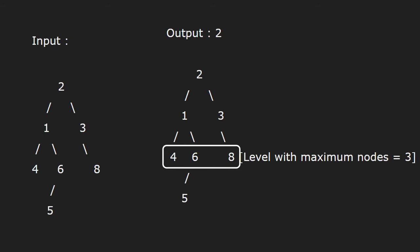We will use the level order traversal technique for this. We know that in level order traversal of a binary tree, at any time, our queue contains all elements of a particular level. So, we find the level with the maximum number of nodes. We assume that the root is at level 0. In the above example, level 2 has maximum number of nodes which is 3. So, 2 will be the output.